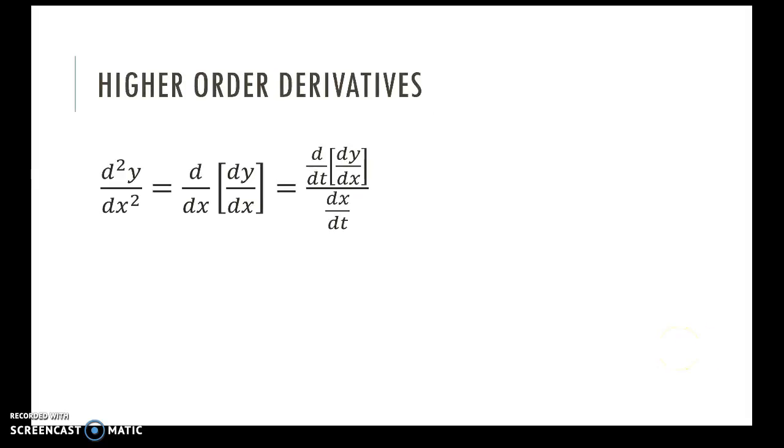Okay, so higher order derivatives, our second derivative. If we're going to talk about what a graph looks like, we need to be able to determine concavity. So to find the second derivative, remember our functions are defined in terms of another parameter. So the second derivative, the derivative with respect to x of our first derivative. So now notice what we have to do here. We find the derivative of the first derivative using whatever rules we need.